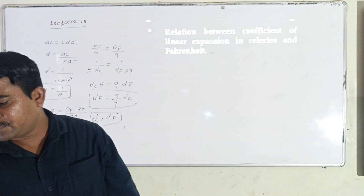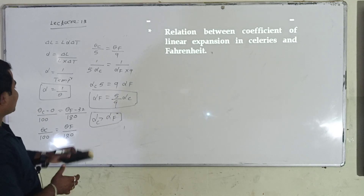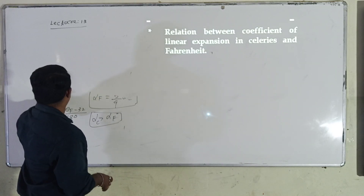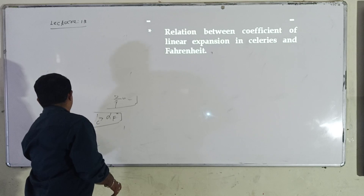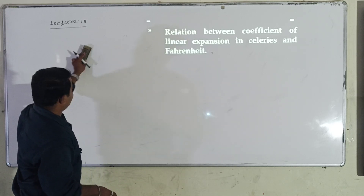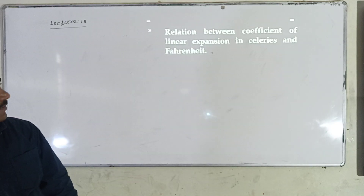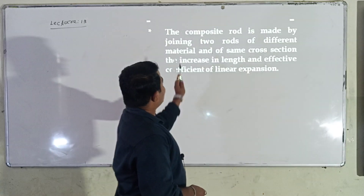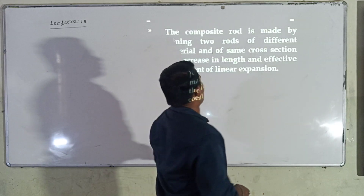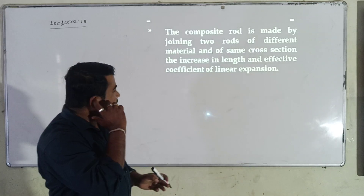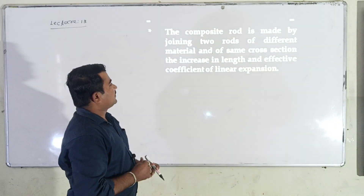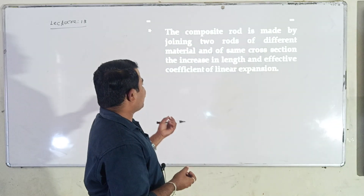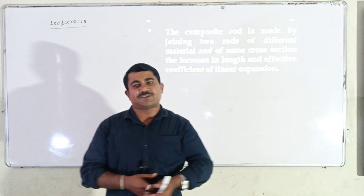This is synopsis number 1. Let us move to the next synopsis. Synopsis 2 is: a composite rod is made by joining two rods of different material of the same area of cross-section. We need to find the increase in length and effective coefficient of linear expansion.